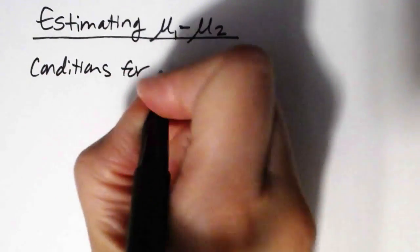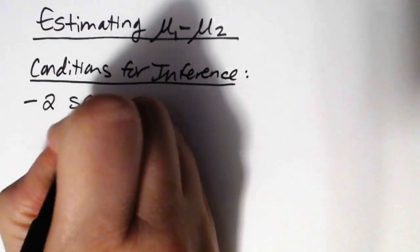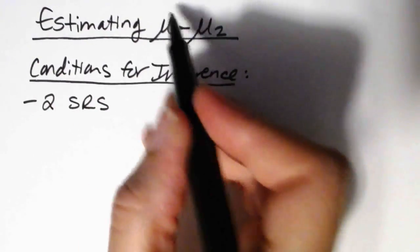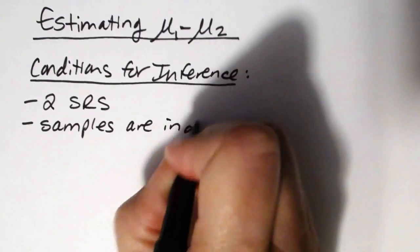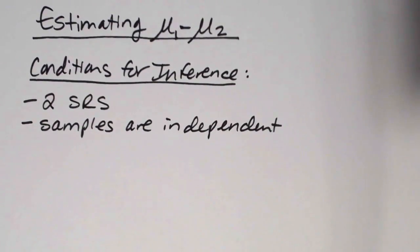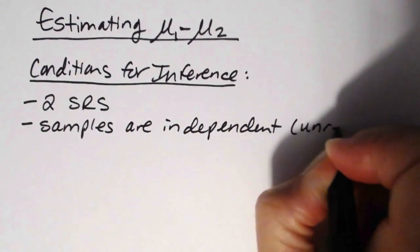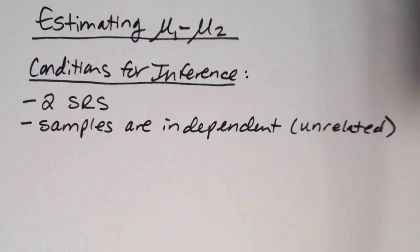Our conditions for inference: we need two simple random samples — one for group one and one for group two — and those samples need to be independent. Here, independent means they're unrelated and don't contain the same individuals in both samples. They need to be two completely separate and distinct samples. Methods for dealing with dependent samples are treated in a different section.